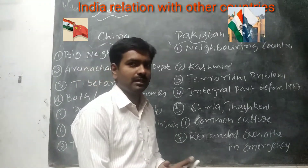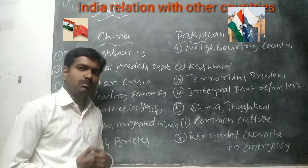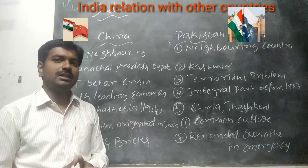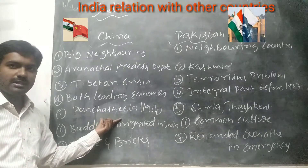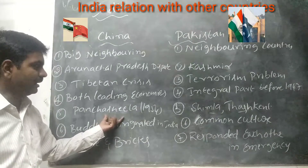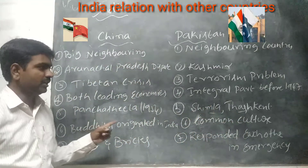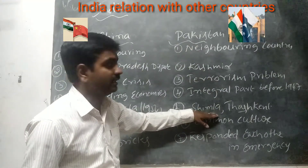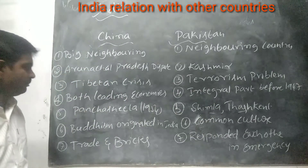After 1947, Pakistan was divided into a separate country. India and China — their relationship is based on the Panchashila principles. India and Pakistan have agreements: the Shimla Agreement and the Tashkent Agreement. The Shimla Agreement was signed when Indira Gandhi was Prime Minister, and the Tashkent Agreement when Lal Bahadur Shastri was Prime Minister.